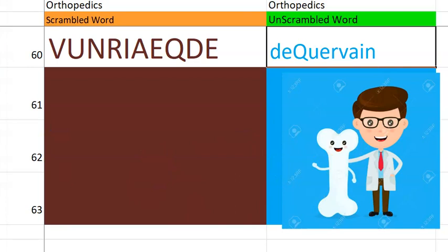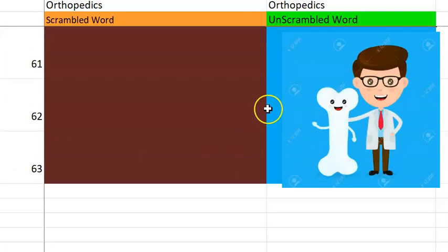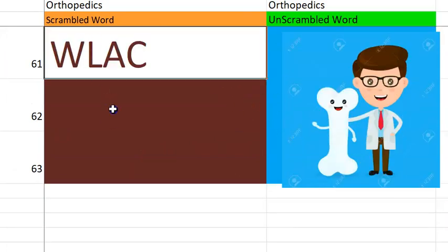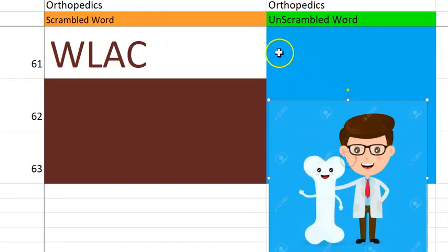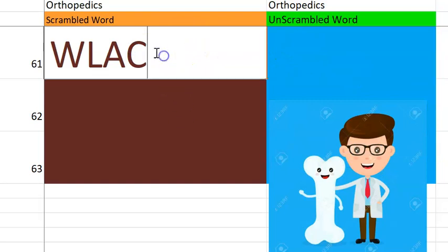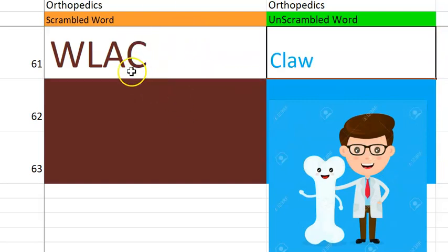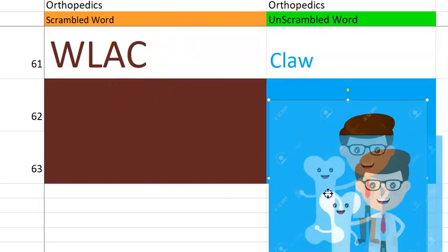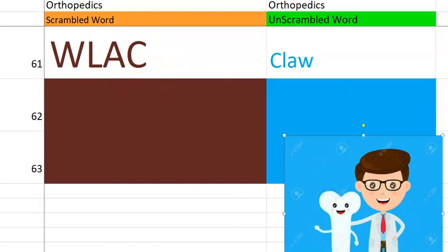Let's go to the 61st one — small one. Again the hand, can be even in the foot. Leprosy can cause this, starting with C, like an animal. Claw. Claw hand.